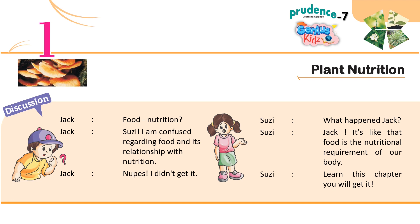Susie: What happened, Jack? Jack: Susie, I am confused regarding food and its relationship with nutrition. Susie: Jack, it's like food is the nutritional requirement of our body. Jack: I did not get it. Susie: Learn this chapter and you will get it.